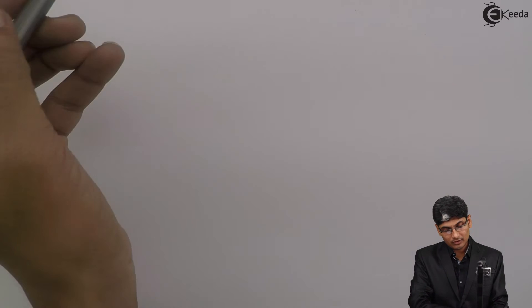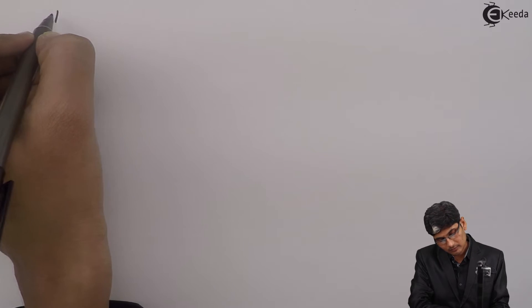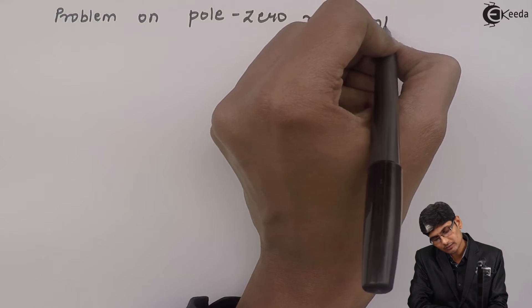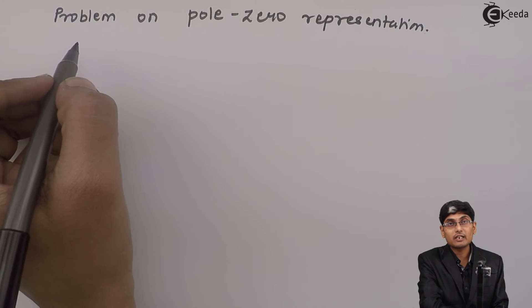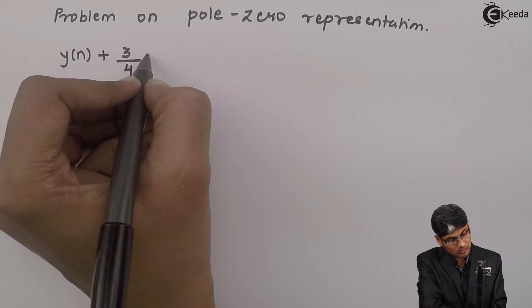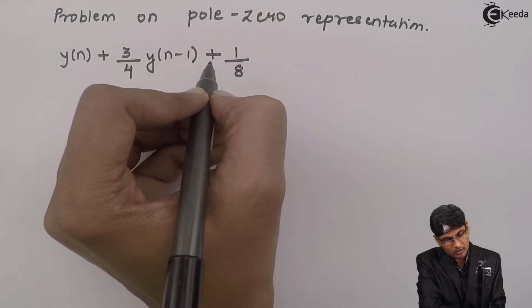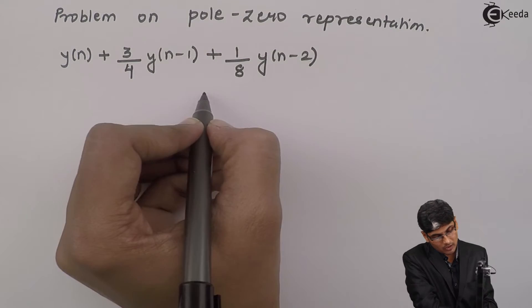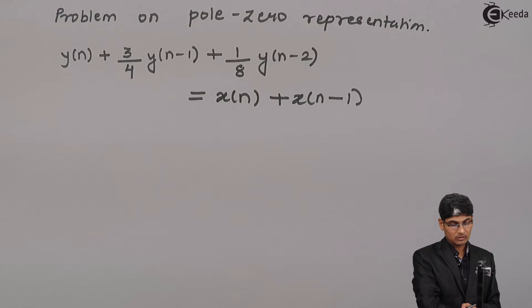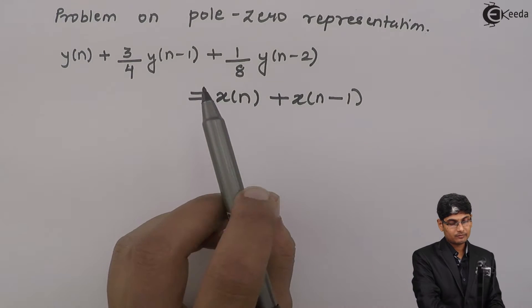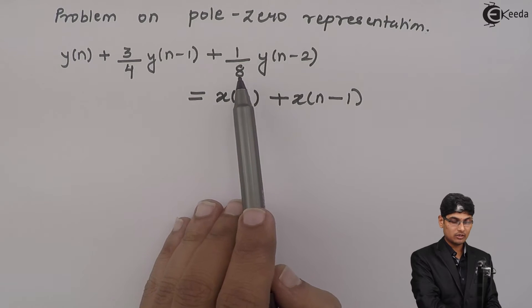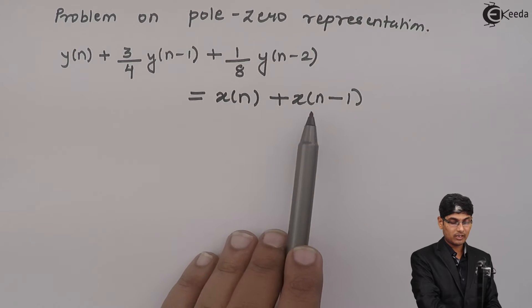Hello friends, today we are going to see a problem on pole-zero representations. Let us take a difference equation: y(n) + (3/4)y(n-1) + (1/8)y(n-2) = x(n) + x(n-1). Here, 3/4 is the coefficient of y(n-1), 1/8 is the coefficient of y(n-2), and the inputs are x(n) and x(n-1).